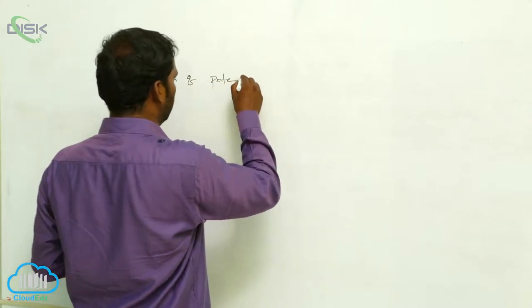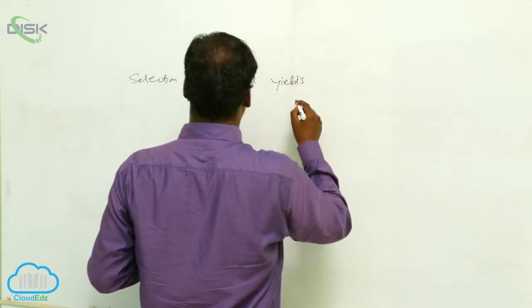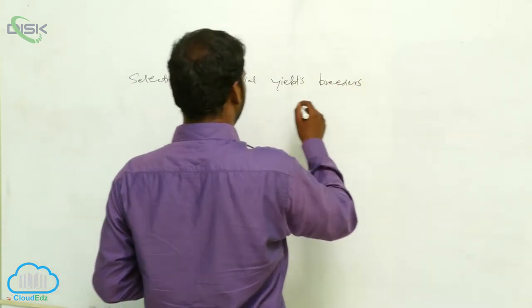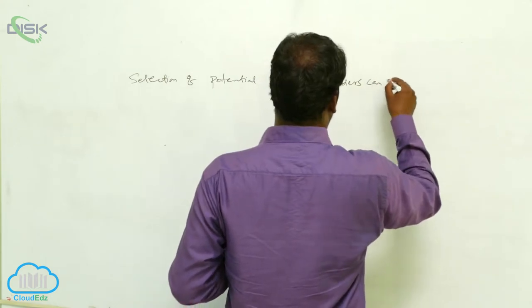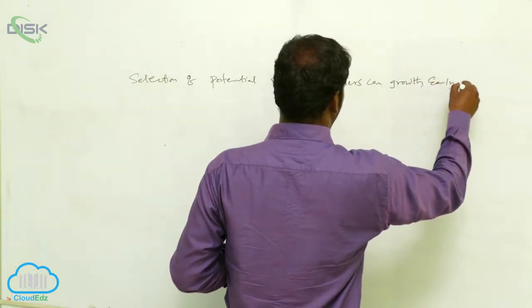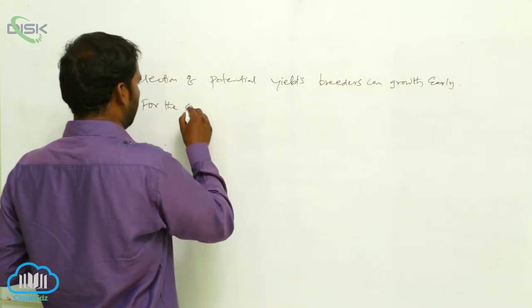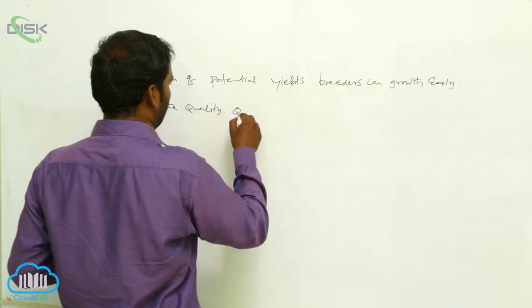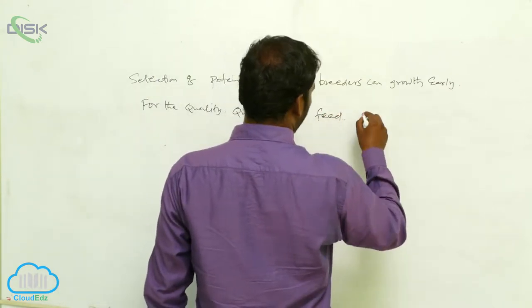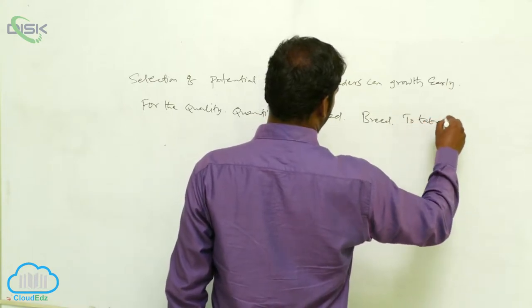Selection of potential wilds in breeders. Breeders can grow early. For the quality and quantity of feed, breeding to take care of it.